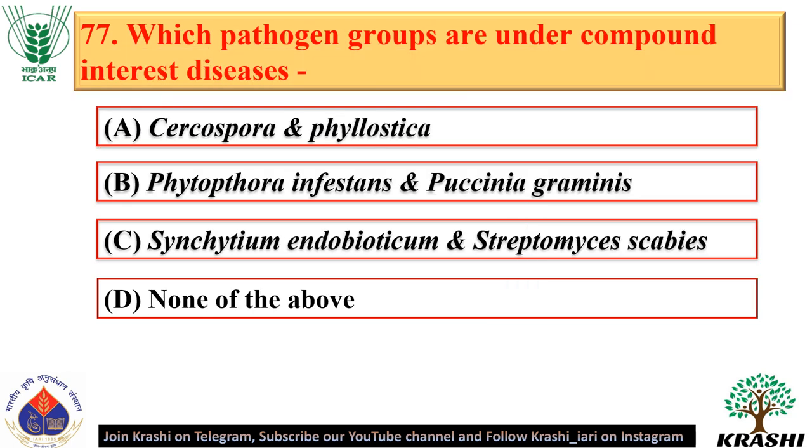Question number 77. Pathogen groups under compound interest diseases include Phytophthora infestans and Puccinia graminis — option B.